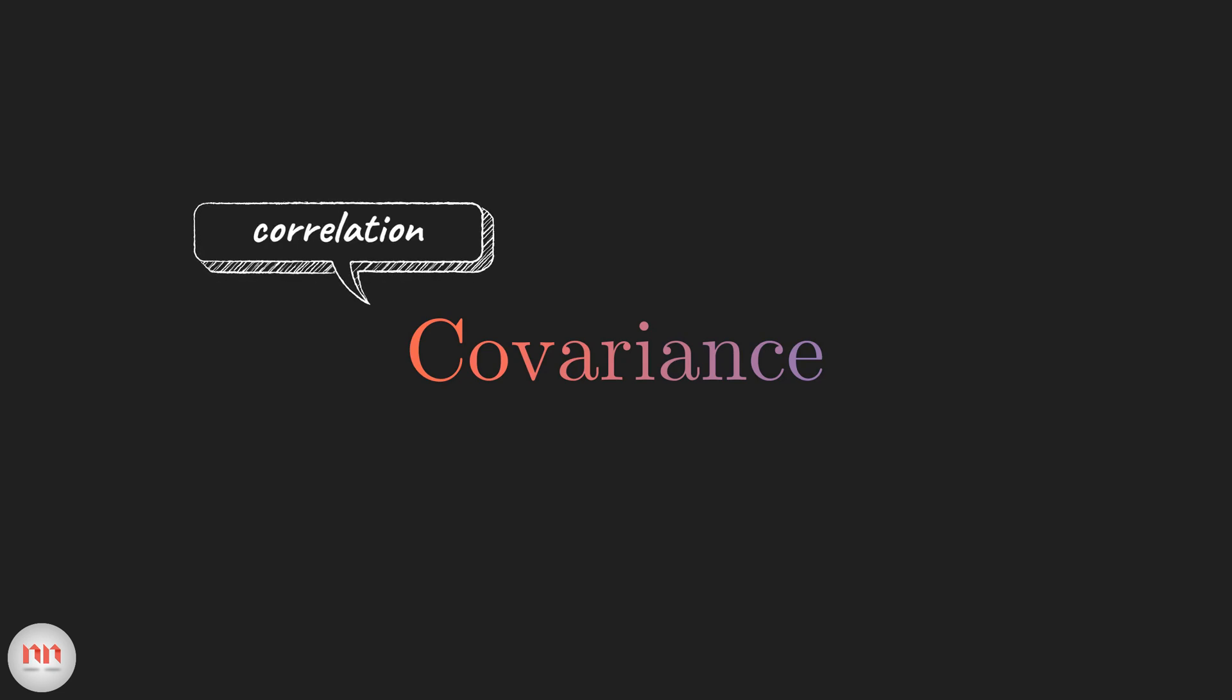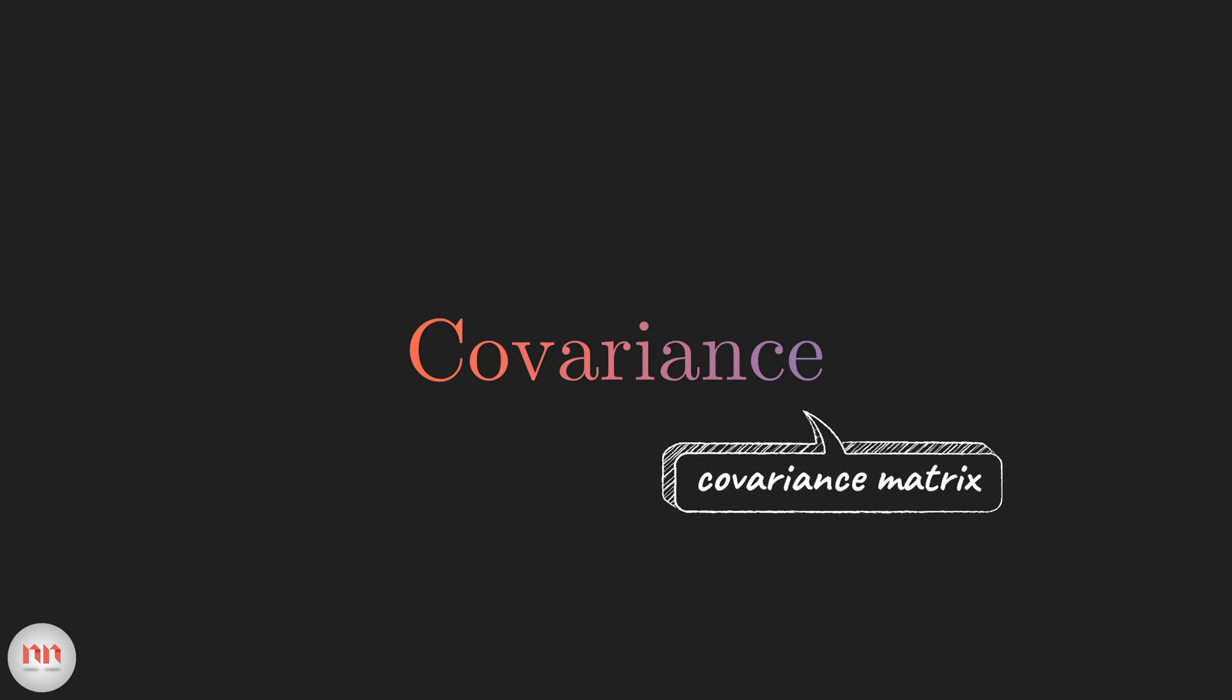But why should you learn this? Well, first of all, covariance is inevitable in the computation of correlation. And covariance matrix is a very useful tool in matrix decomposition, which is of great importance in dimensionality reduction and in other machine learning applications.